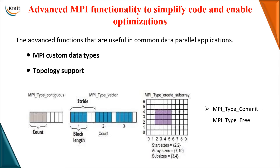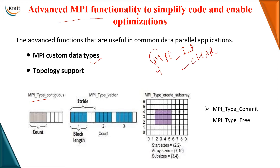Now coming to advanced MPI functionality. For additional functionality beyond standard MPI, we use MPI custom data types. Other than normal types like MPI_INT and MPI_CHAR, we can define custom data types. The first is MPI_Type_contiguous, which lets you store continuous data elements in a single type.